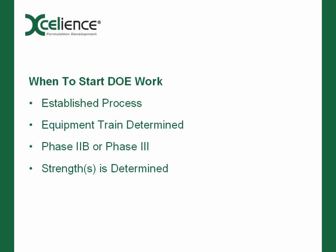When should we start DOE work and begin considering scale-up? We want to make sure we have an established process and that the equipment train is determined — whether that's a blend, roller compaction, lubrication blend and compress; a direct blend and compress; a wet granulation; or whatever it might be. We need that train determined before doing a lot of scale-up work, otherwise it could all change and that work would be for naught. We usually want to start no later than Phase 2b and definitely prior to Phase 3. We also need to know what strengths we'll be working with for that particular active.